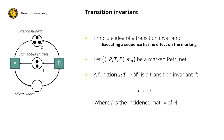This is the basic idea behind transition invariants. Executing the transitions of the invariant has no effect on the marking. Formally, a transition invariant is a function that assigns a non-negative weight to each transition, so that if we multiply the incidence matrix of the Petri net with the function, the result is the empty vector. In other words, the effect of each transition in the invariant on each place is 0.